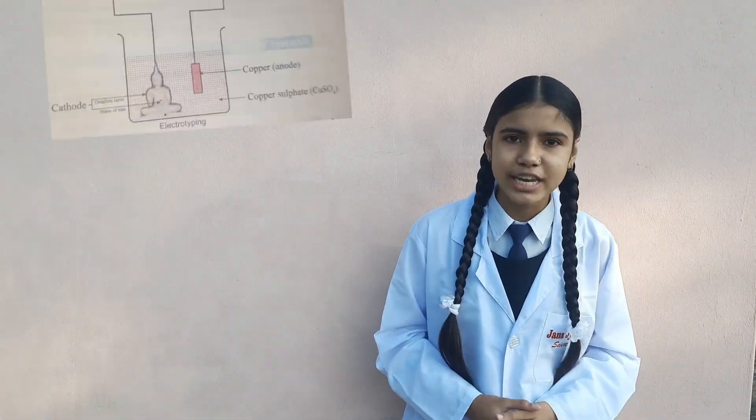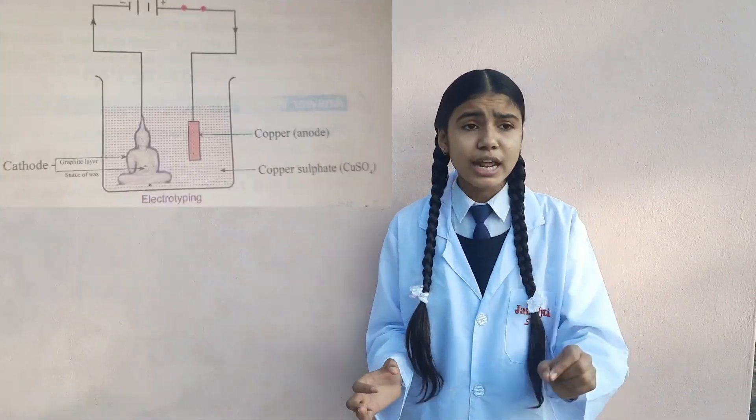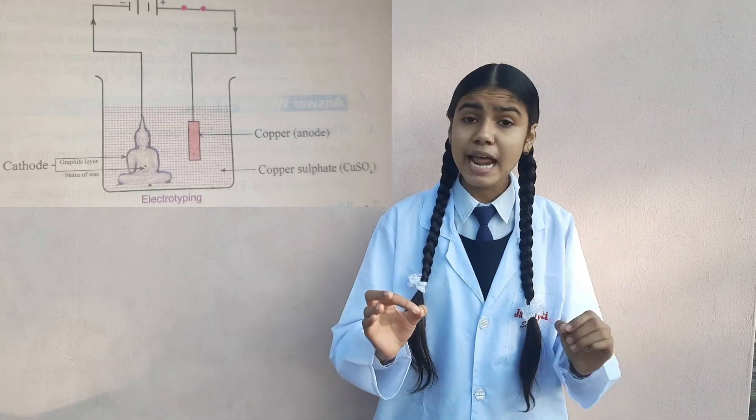Applications of electro refining: electro refining is used to purify impure metals during their extraction, and it is used to separate metals from a mixture of metals. Now at last, let's talk about electrotyping. Electrotyping is the combined application of electrolysis and electroplating. It was invented by Maurice Von Jacobi in Russia in 1838 AD.